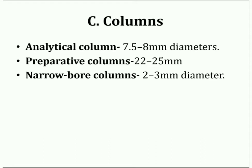The next component includes columns. Various types of columns are used in gel permeation chromatography: analytical columns, preparative columns, and narrow bore columns. Dimensions are: analytical columns 7.5 to 8 mm, preparative columns 22 to 25 mm, and narrow bore columns 2 to 3 mm diameter.